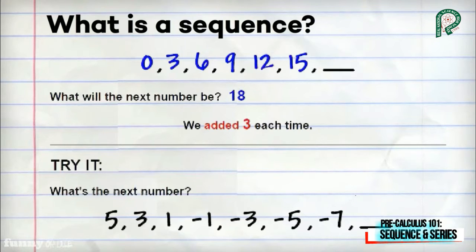Let's try another one: 5, 3, 1, negative 1, negative 3, negative 5, negative 7. What's the next number? The answer is negative 9. We just added negative 2.